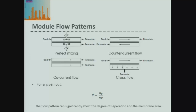Then we have counter-current flow and co-current flow, like heat exchangers. In counter-current flow, the feed-to-retentate flows in one direction and the permeate is taken out on the same side as our feed enters. In co-current flow, feed goes to retentate and the permeate is taken out on the same side. The main difference is that in co-current you have your highest permeate concentration mixed with your lowest retentate concentration — so the driving force is lowest — whereas in counter-current you have the highest permeate concentration aligned with the highest feed concentration, giving a more constant driving force across the membrane.